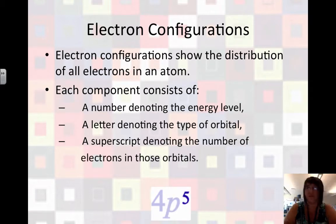Then the last thing you'll see in an electron configuration is a superscript that tells how many electrons are in those types of orbitals. So in energy level 4, in subshell P, there would be 5 electrons.